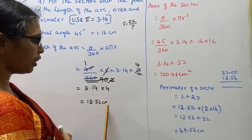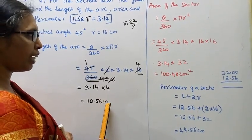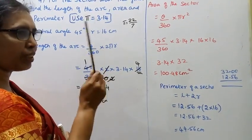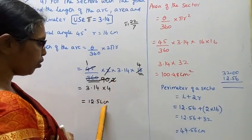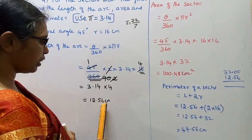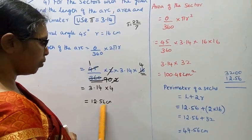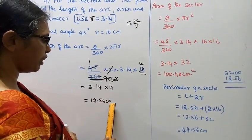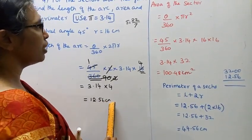The unit is centimeter. So the length of the arc is 12.56 centimeters.